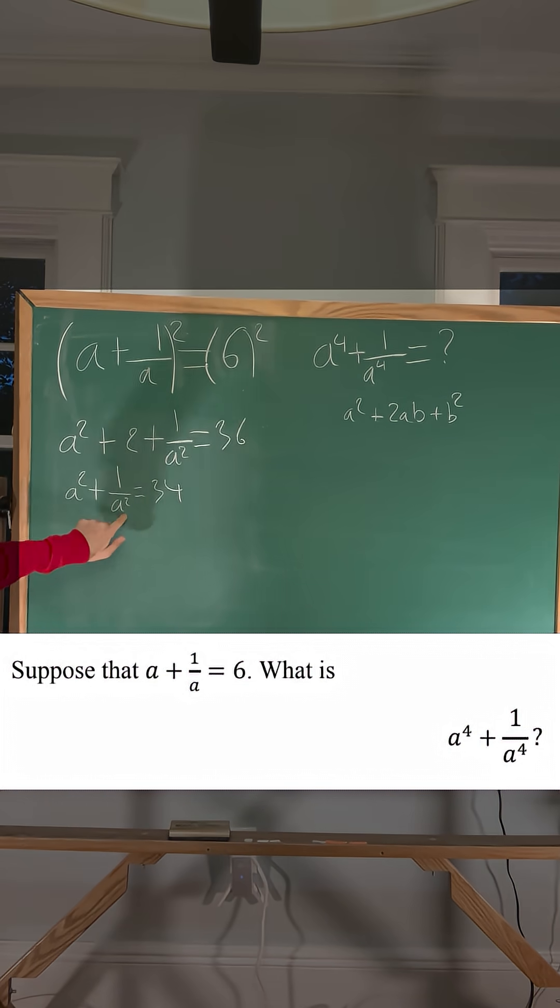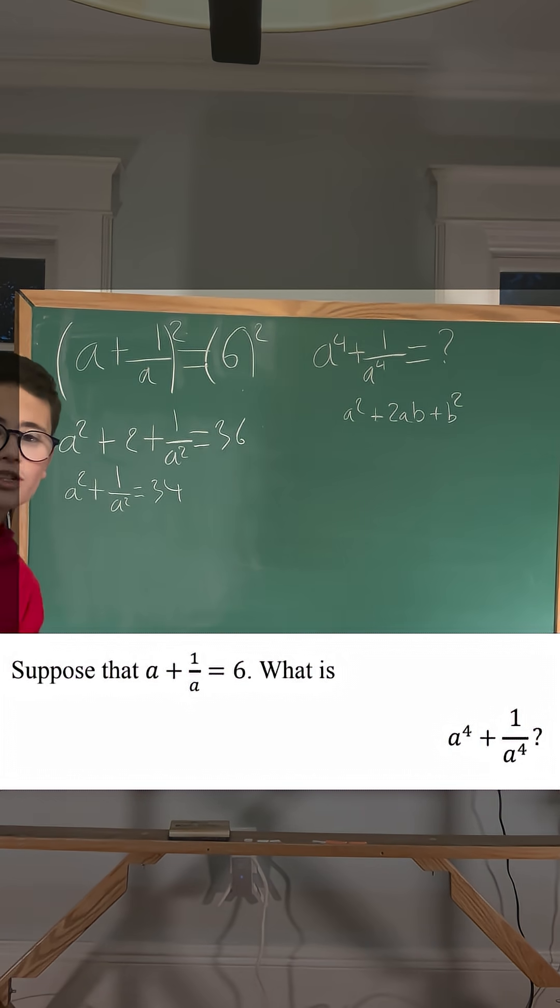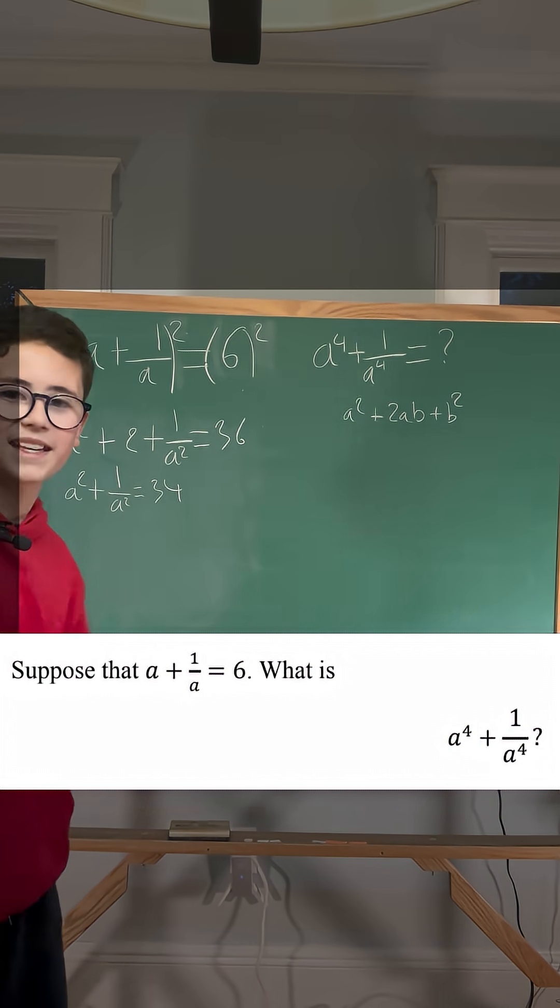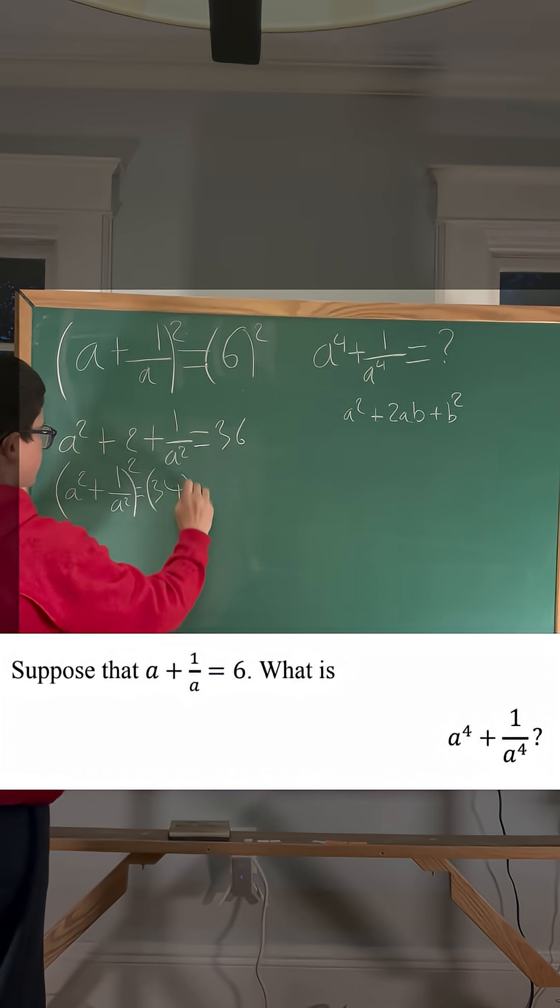Now we have a squared and 1 over a squared here, but we want a to the 4th and 1 over a to the 4th, so we're going to square each side of this equation again. So square this side, square this side.